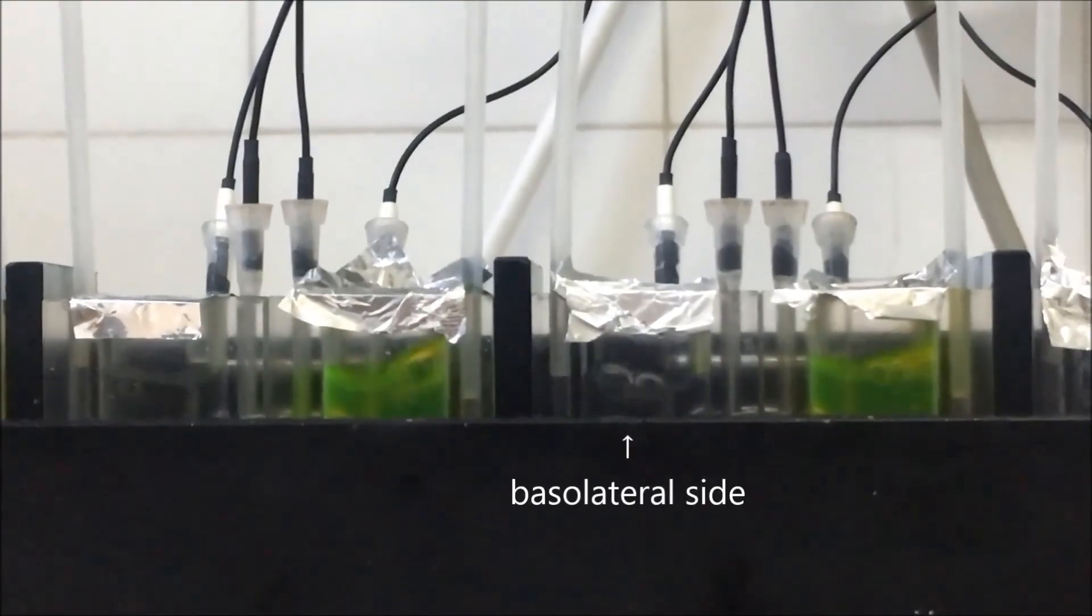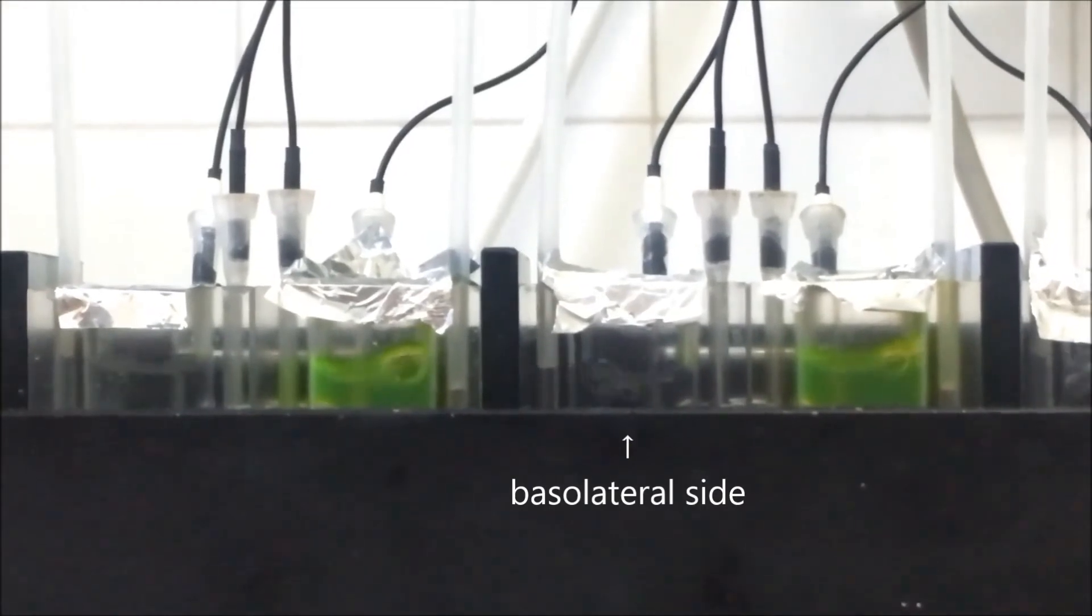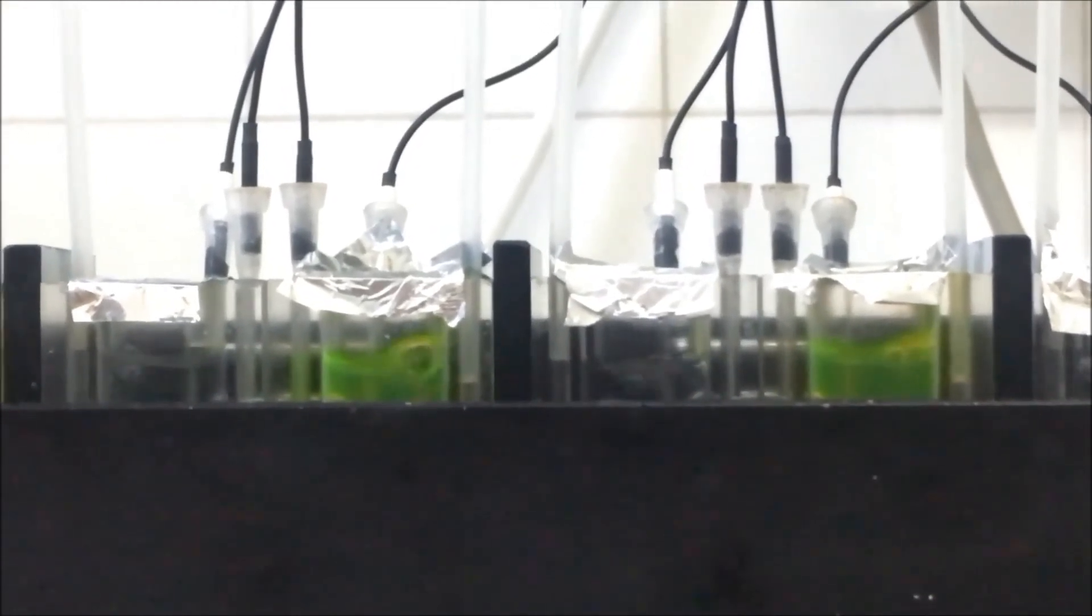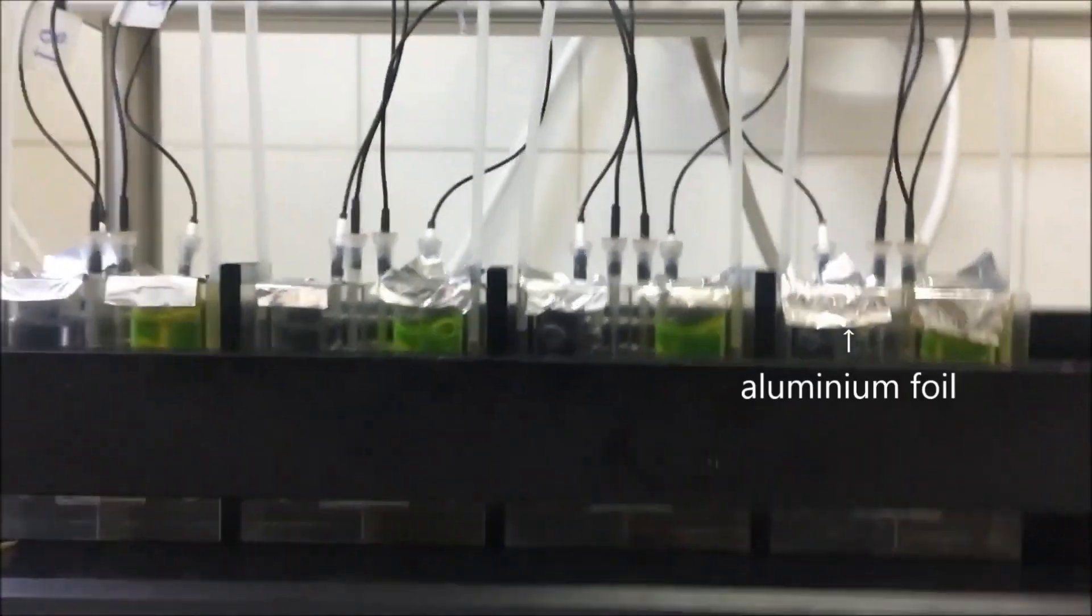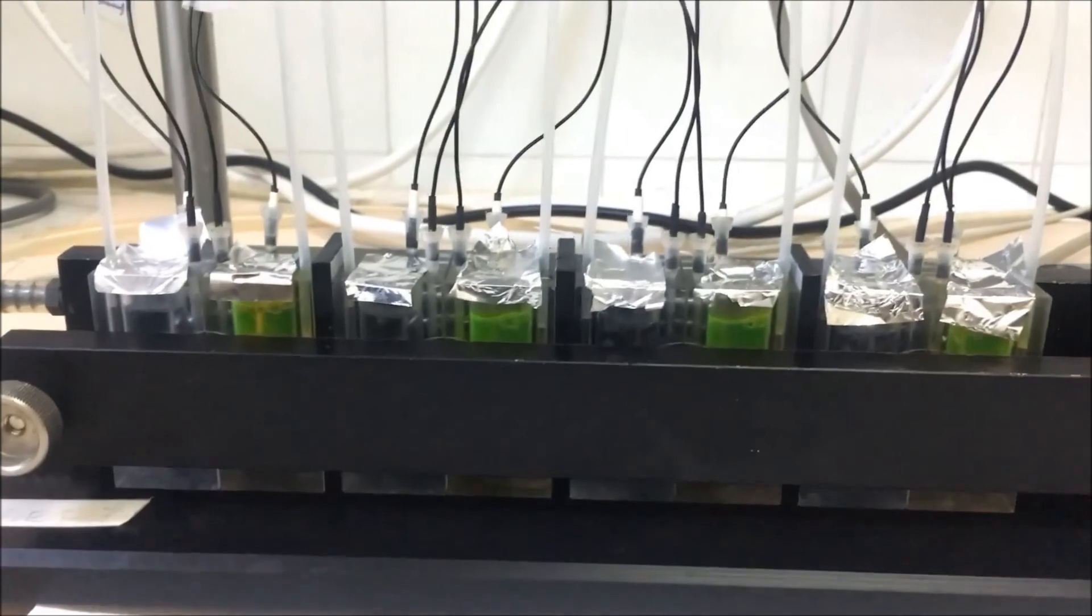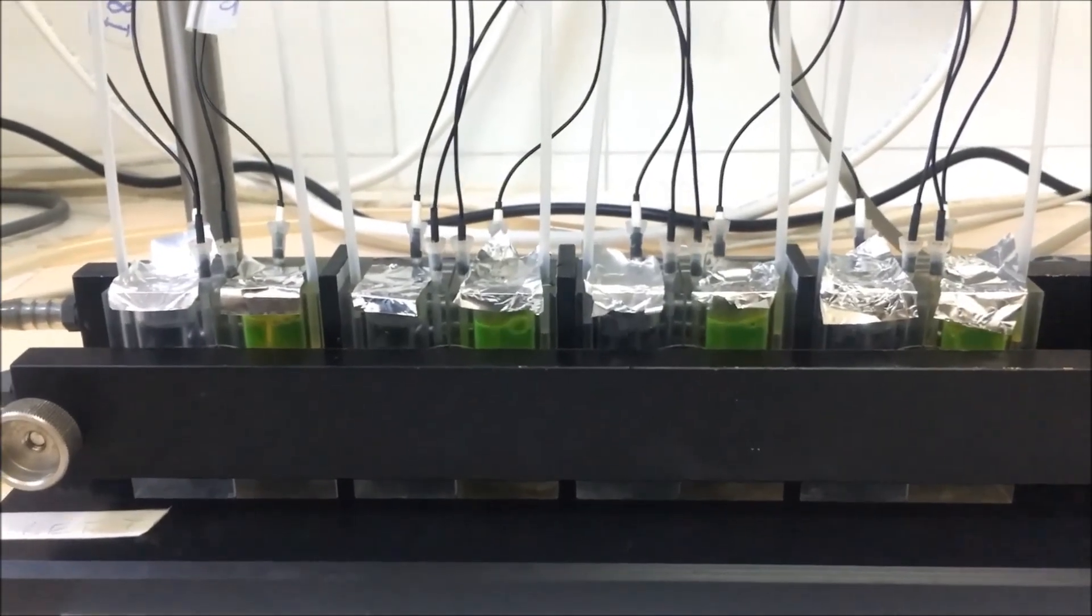Collect samples from the basolateral side within 2 hours in every 30 minutes. Replace with the same amount of Ringer as the samples every 30 minutes. We cover the top side of the chambers with aluminum foil to avoid fluorescein contamination to the basolateral side.